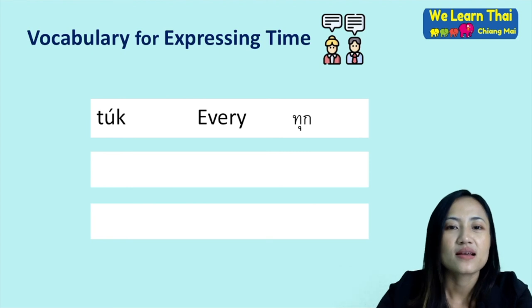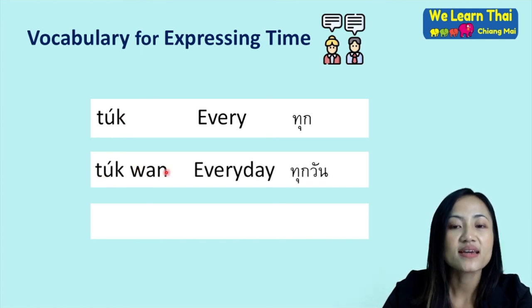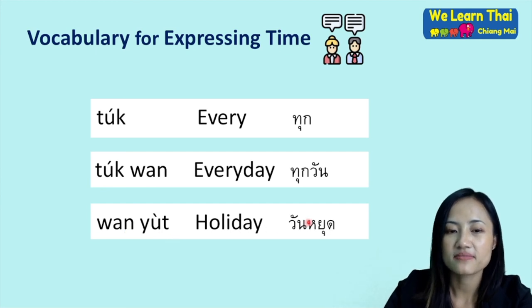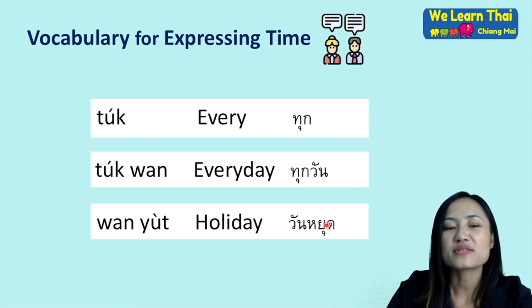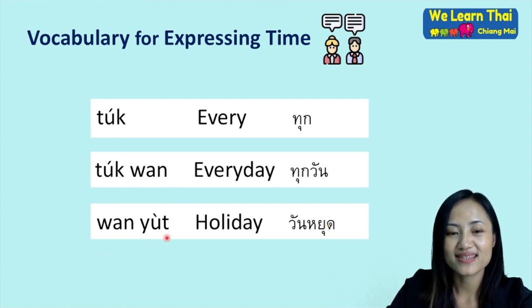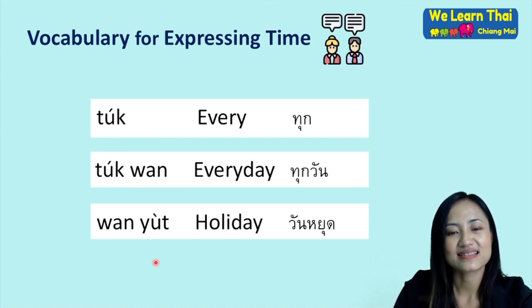The word ทุก means 'every.' So ทุกวัน means 'every day.' วันหยุด means 'holiday' or 'day off.' To say 'every holiday,' you say ทุกวันหยุด. To say 'every Sunday,' you say ทุกวันอาทิตย์.